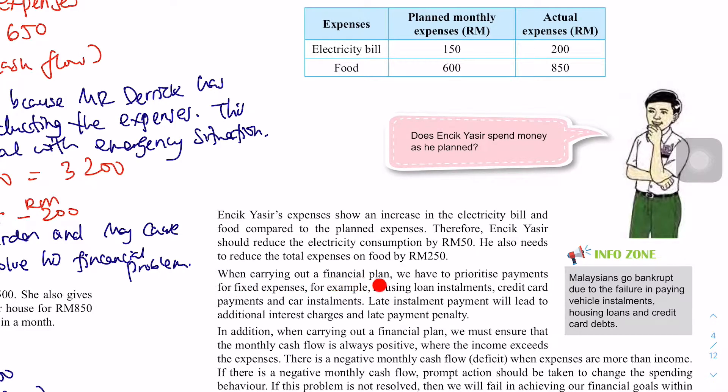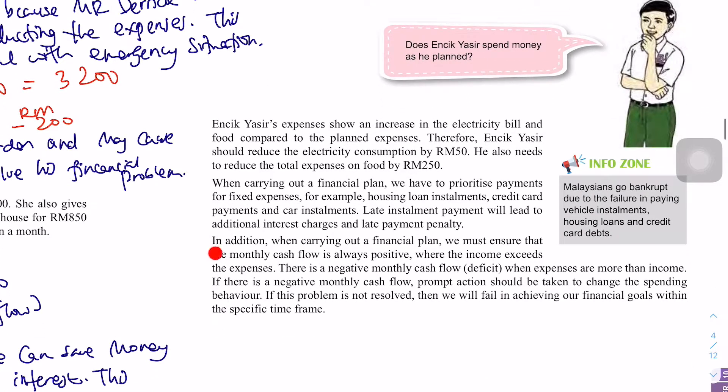When carrying out the financial plan, we have to prioritize payment for fixed expenses. Fixed expenses ni penting. For example, housing loan, installment, credit card payment and car installment. Yang fixed ni kita kena pentingkan dulu. Sebab kenapa? Late installment payment will lead to additional interest charges and late payment penalty. Sebagai contoh, kalau credit card, dia kata kita kena bayar sebelum RM25. Kalau awak bayar selepas RM5, awak kena denda. Contoh, kalau credit card CIMB, late charges RM50, walaupun sehari, awak kena tambah RM50, akan rugi RM50 boleh beli berapa ketuk ayam KFC, kan?